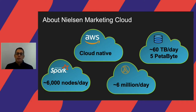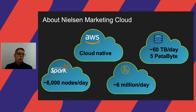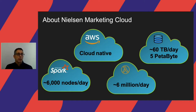In a nutshell, about Nielsen Marketing Cloud: we are cloud native, we process roughly 60 terabytes of new data every day, and we store a total of about five petabytes in our data lake. We're heavy users of Spark — roughly 6,000 nodes every day across all our Spark clusters — and we're heavy users of Lambda functions that we also use in some of our pipelines.